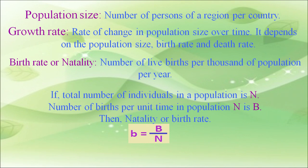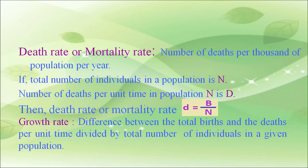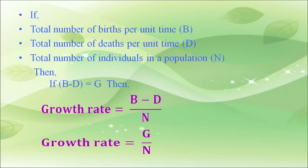Birth rate, or natality, is the number of live births per thousand of population per year. If the total number of individuals in a population is N, and number of births per unit time is B, then birth rate b = B/N. Death rate is the number of deaths per thousand of population per year. If the total number of deaths per unit time is D, then death rate d = D/N. Growth rate is the difference between total births and total deaths per unit time divided by total individuals in the population. If B minus D equals G, then growth rate = G/N.